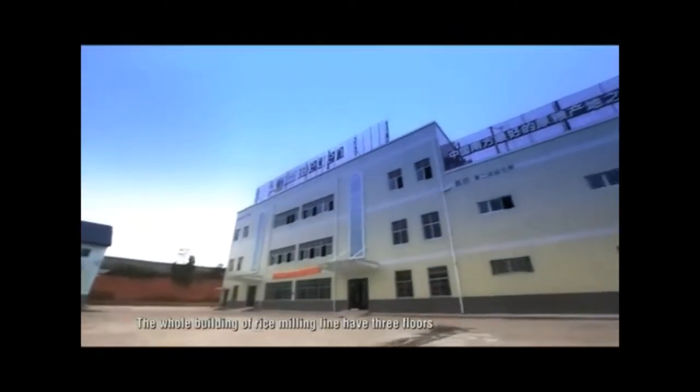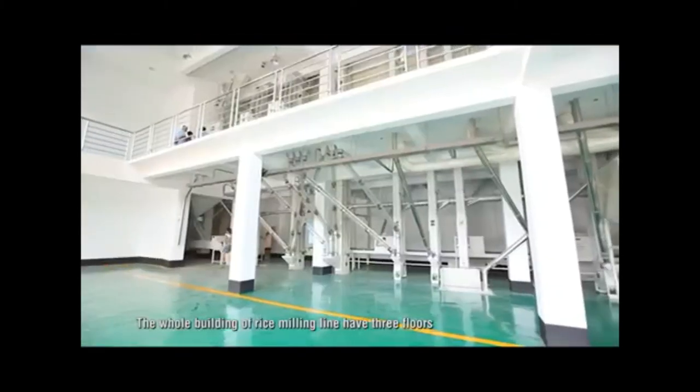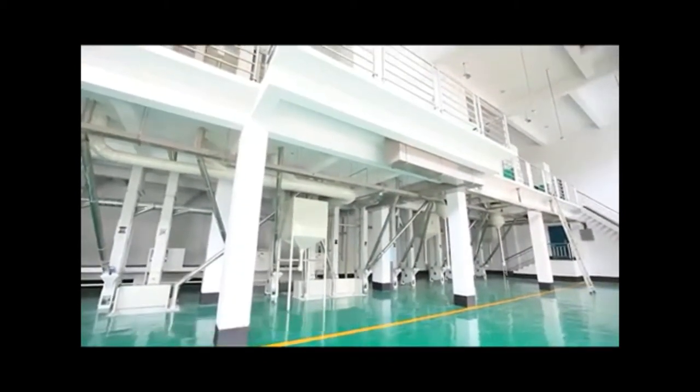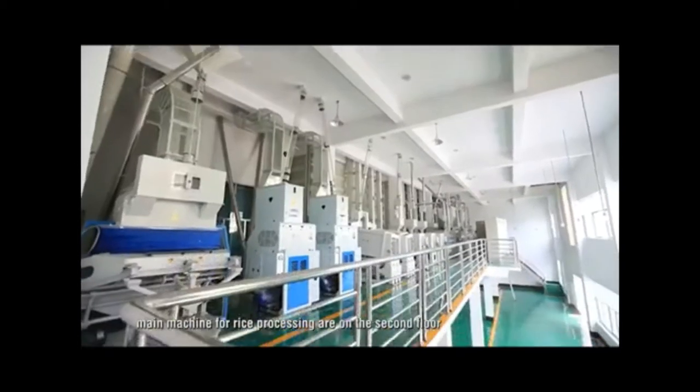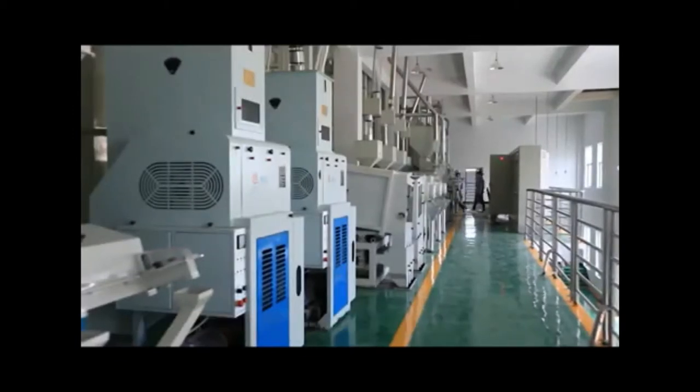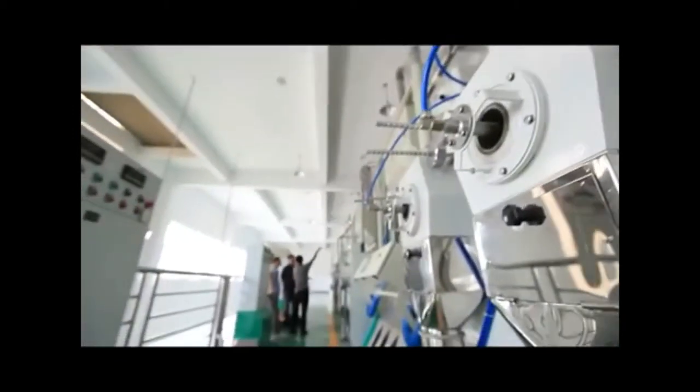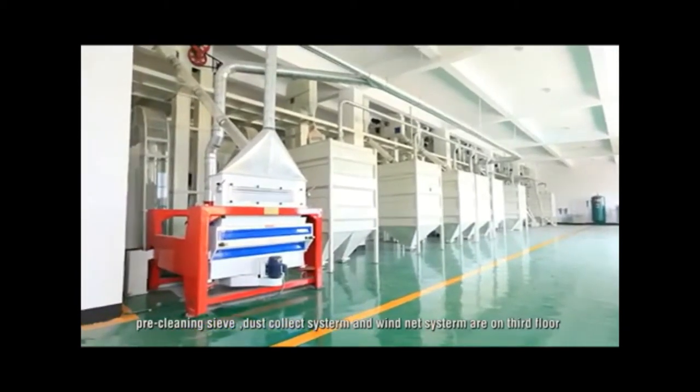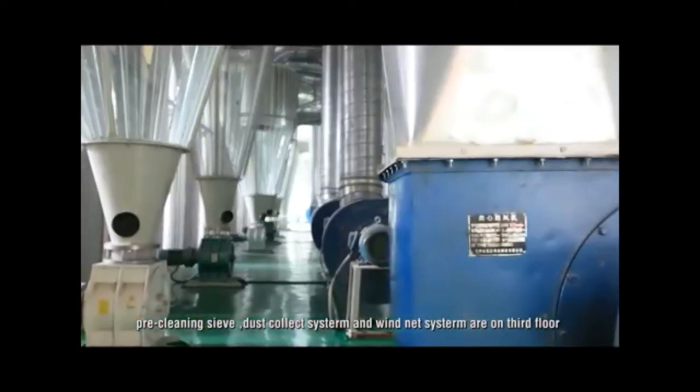The whole building of rice milling line has three floors. Conveying machine and elevator around the first floor. Main machine for rice processing around the second floor. Pre-cleaning sieve, dust collect system and wind net system around the third floor.